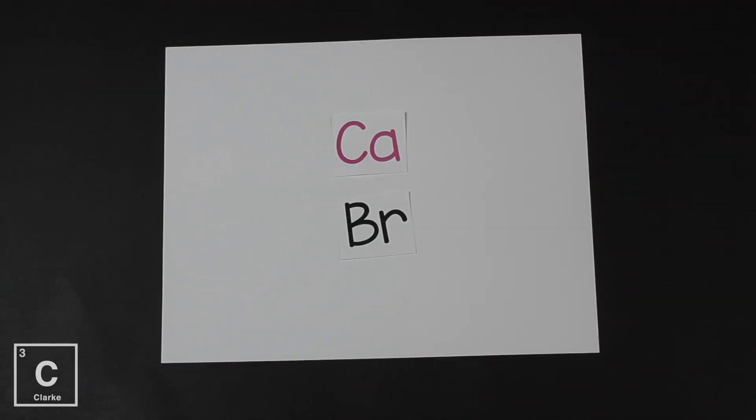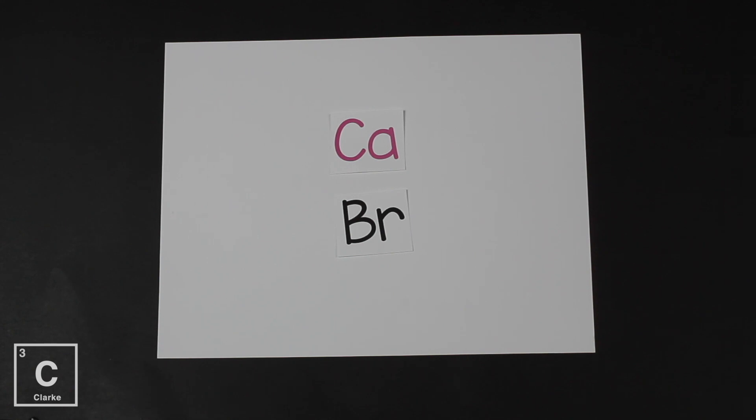Let's look at this example with calcium and bromine. Now calcium is in group two, so it has two valence electrons. Let's look at its Lewis dot structure. And bromine, that's a halogen. It's over in group 17 and has seven valence electrons. So I'm going to draw that Lewis dot structure.